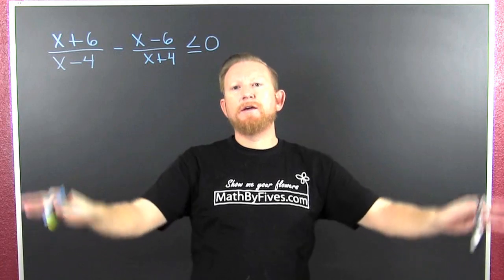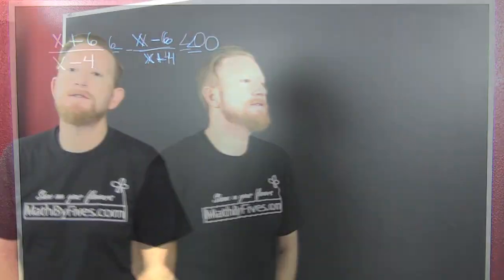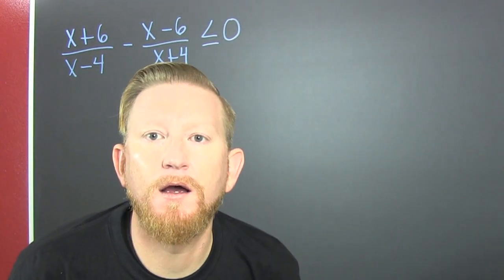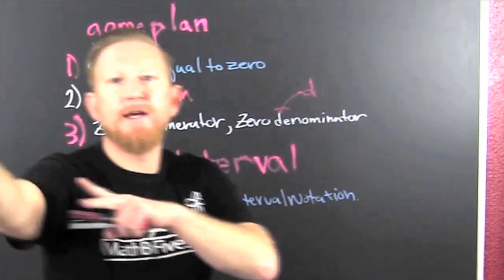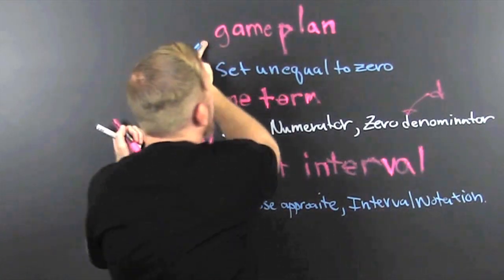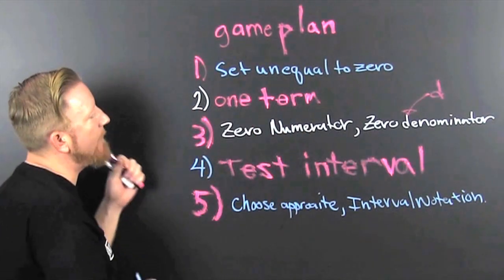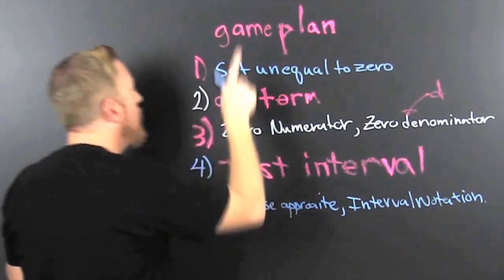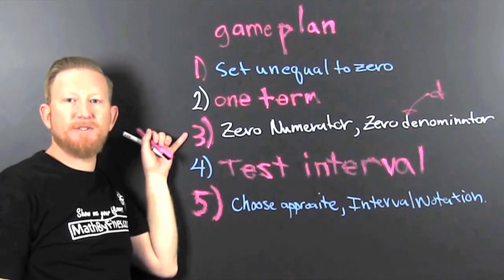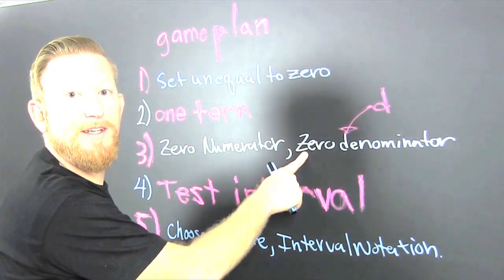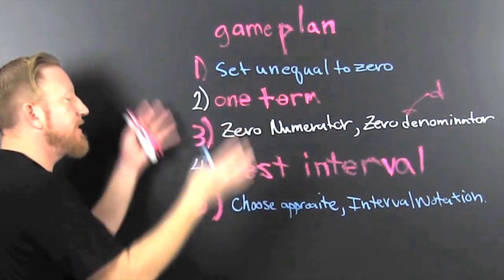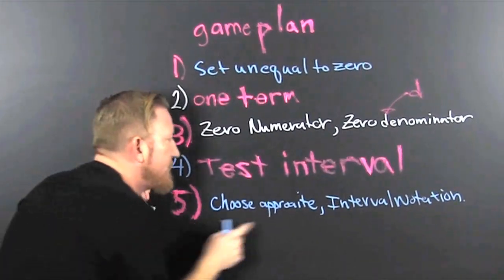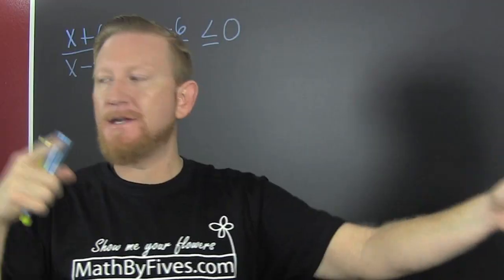Rational inequalities. The game plan for rational inequalities. We first want to set it unequal to zero. Then we need one term. We get the zeros of the numerator and the denominator - when you watch the videos you'll understand what that D is. And then we're gonna test the intervals in between the critical values, then choose the appropriate interval notation. Now that we got that game plan.